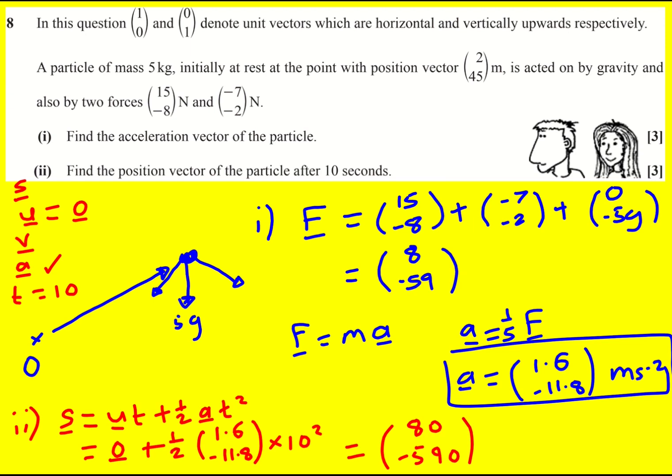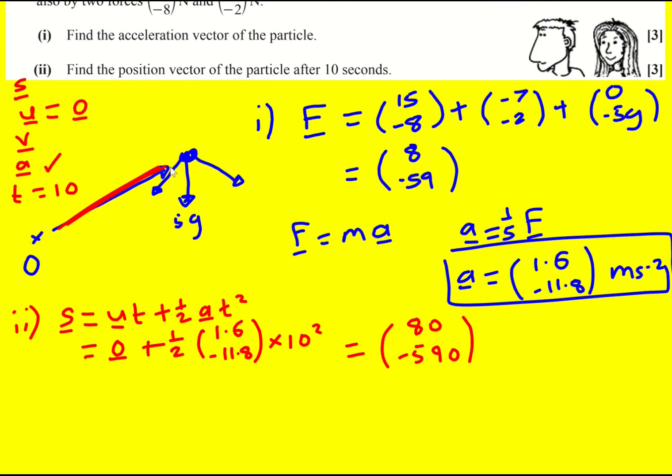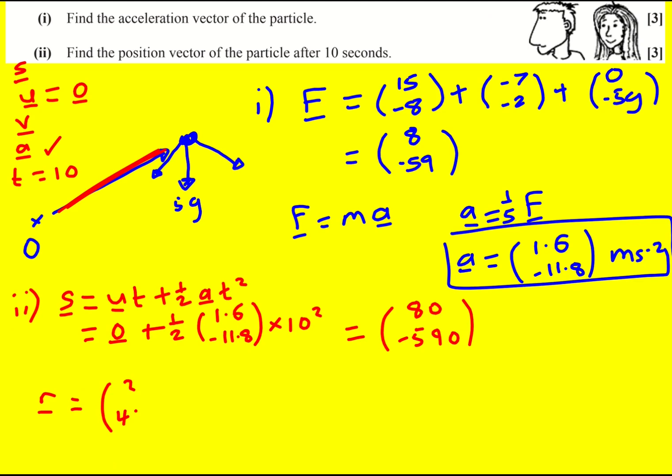Now just be careful, that is not the answer because remember I talked a little bit about a position vector here, so we need to add that on. We've worked out the displacement from the original position, that's what SUVAT does, but we've got to remember we're now comparing with the origin. So r, this is going to be my position vector, it's going to be my (2, 45) plus (80, -590), which gives (82, -545).